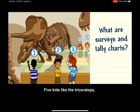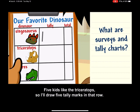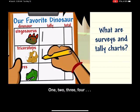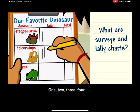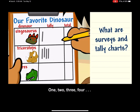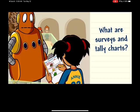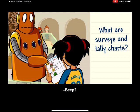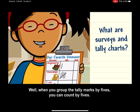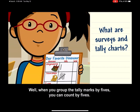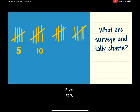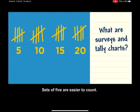You can draw one tally mark to stand for one vote. Five kids like the Triceratops, so I'll draw five tally marks in that row: one, two, three, four — the fifth mark is drawn across the other four. When you group the tally marks by fives, you can count by fives: five, ten, fifteen, twenty. Sets of fives are easier to count.